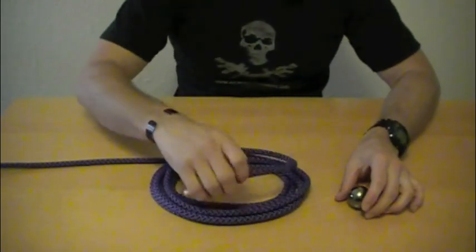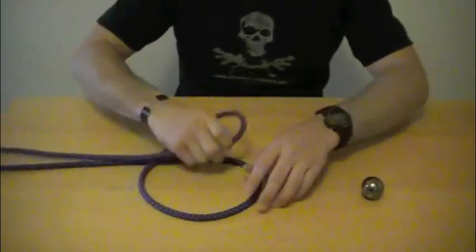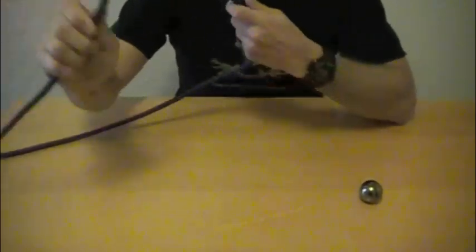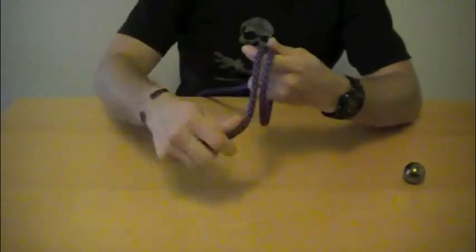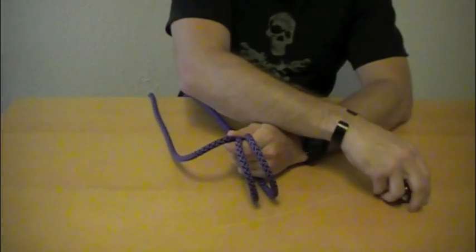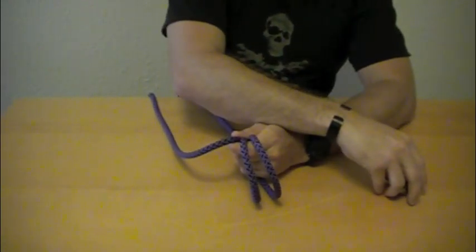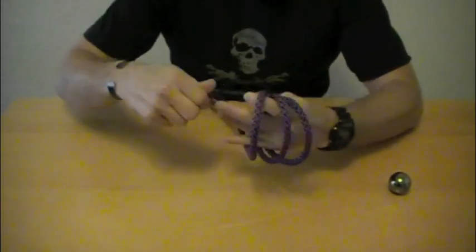The first step in making a Monkey's Fist is making three vertical turns with the rope. There's one, two, and there goes our marble. Three vertical turns with the rope.